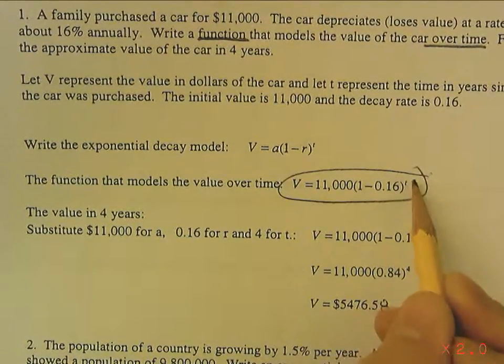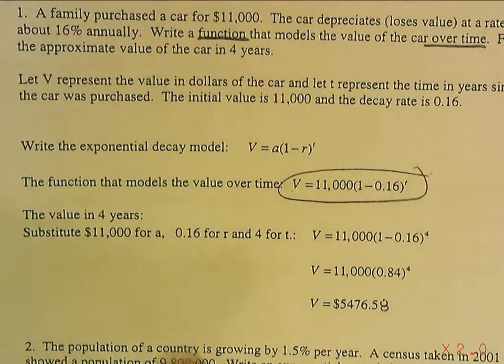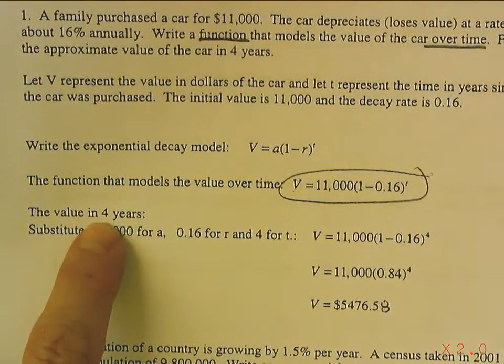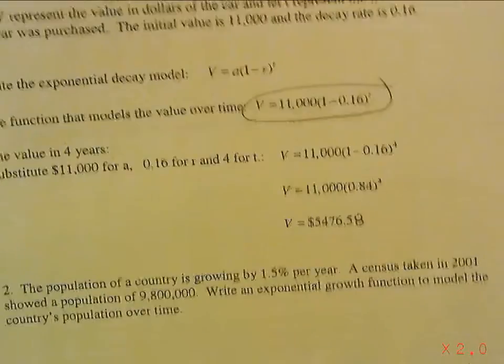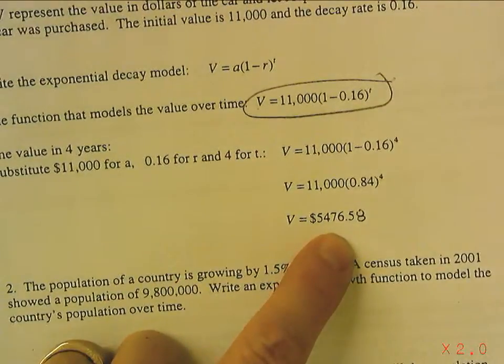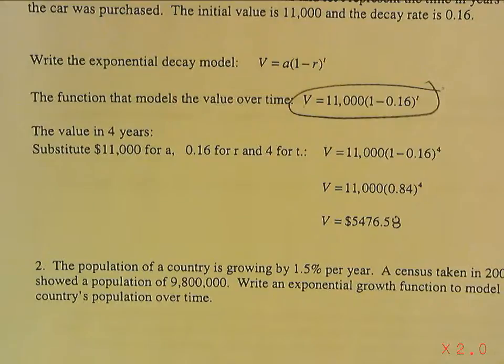and this would be the function. Now, notice there's two unknowns, the v and the t. But then, I'm going to plug in the value in four years. So, I'm going to plug in four for t, and I get the value of the car after four years of depreciation.